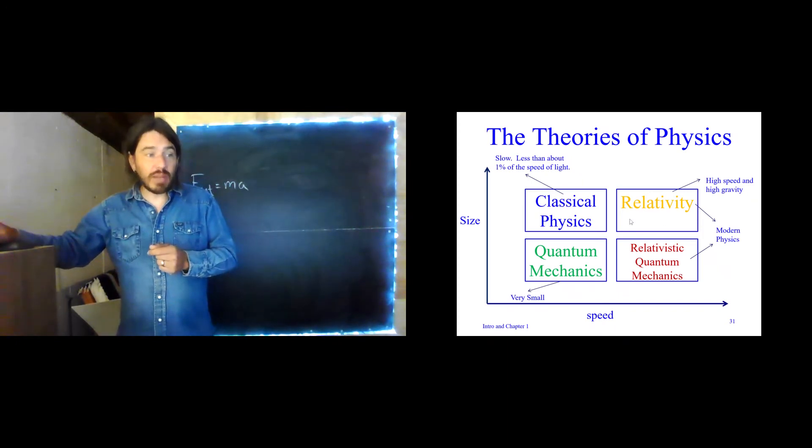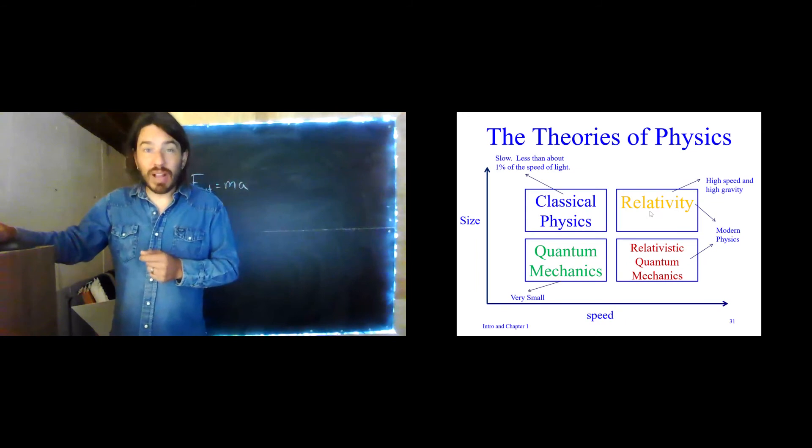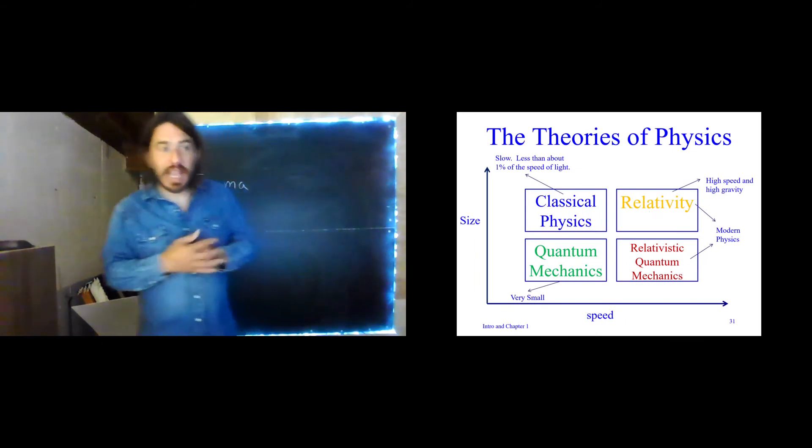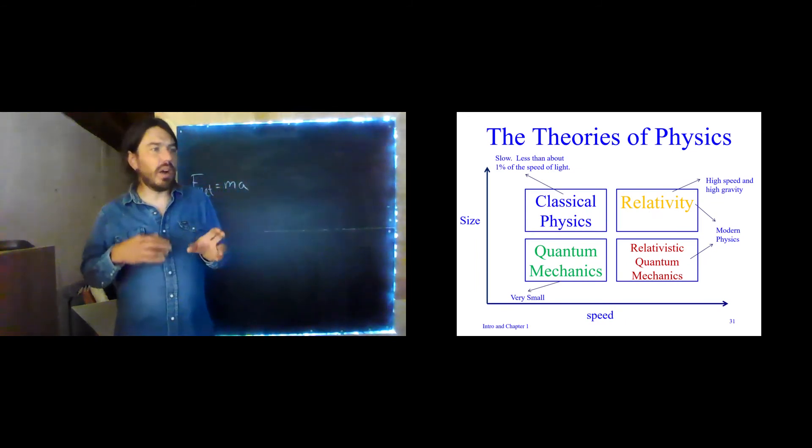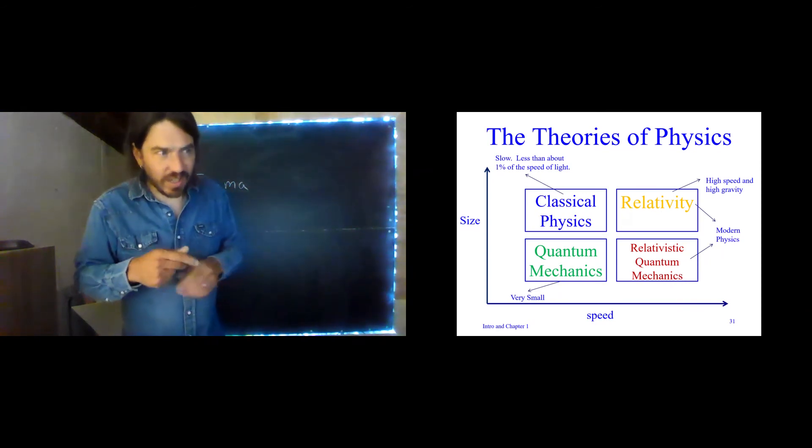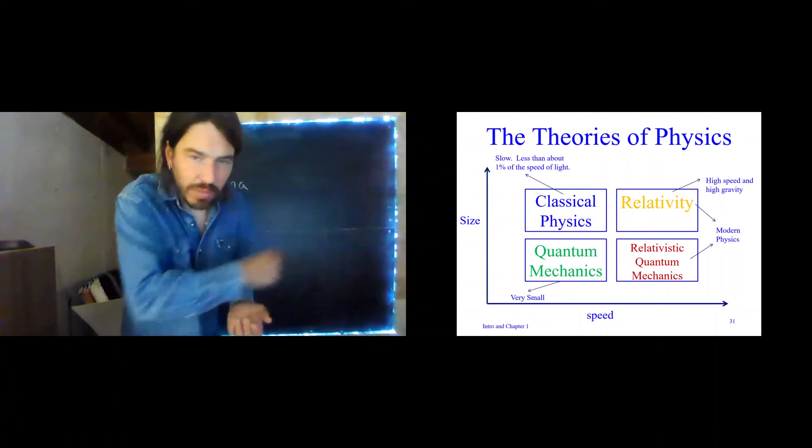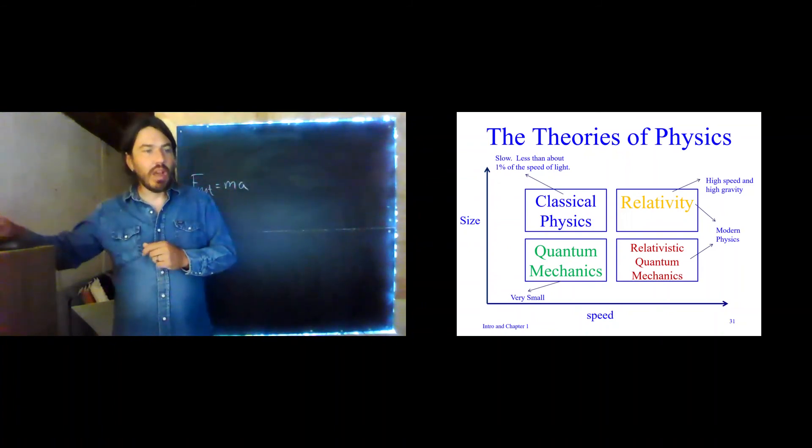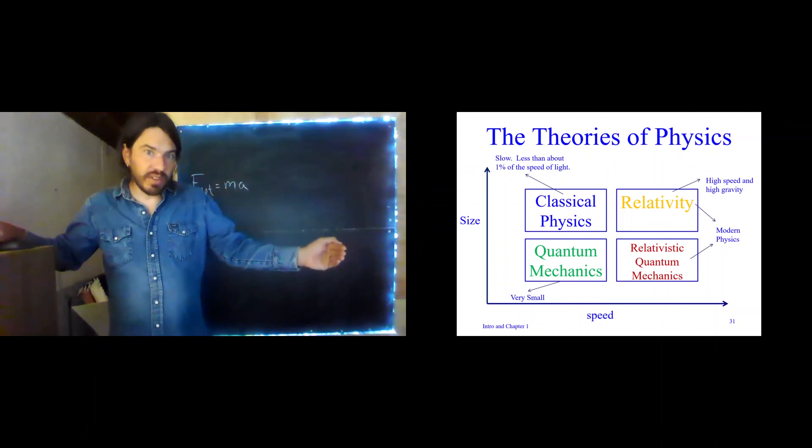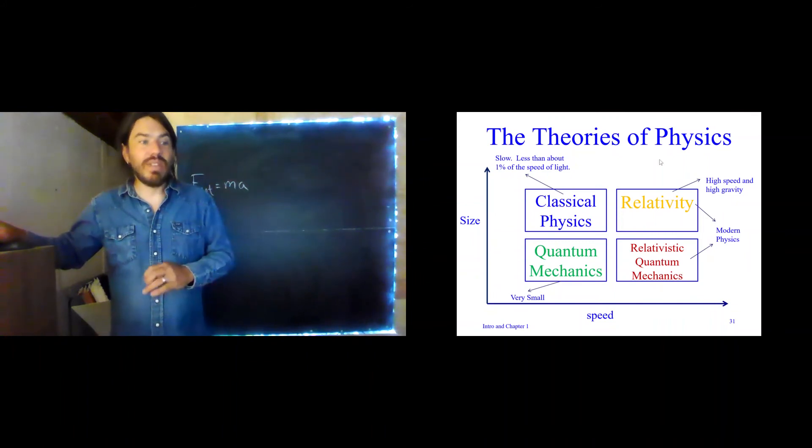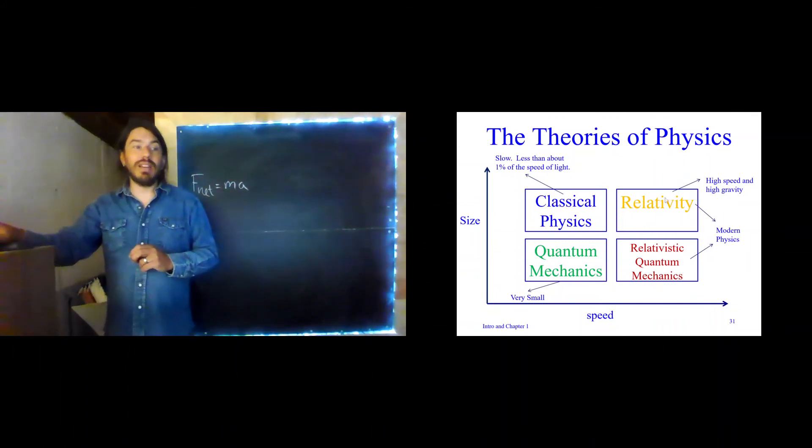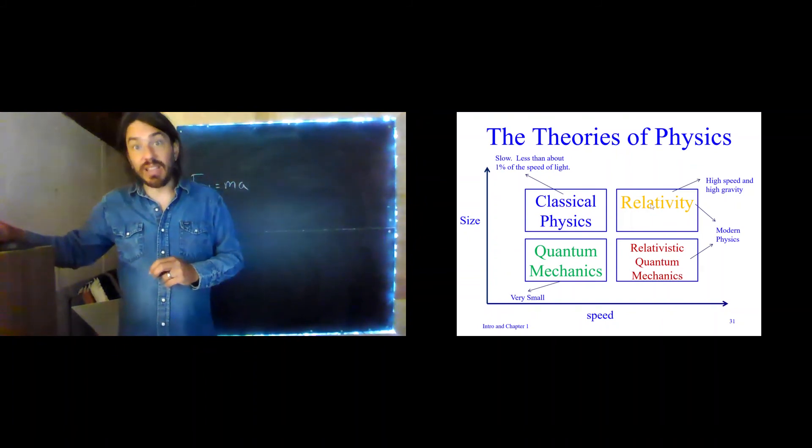That's mostly what we're going to be studying in this class. At the end of the next semester we're going to get a chance to talk a little bit about relativity and quantum mechanics. Relativity applies to very high speeds and very high gravity. High speeds like some fraction of the speed of light, more than 1% of the speed of light. High speed and high gravity too. It turns out the orbit of Mercury is not predictable over long time periods with Newton's law of gravity, because gravity is very strong. Gravity is so strong that we need to use Einstein's theory of relativity to get the correct answer.